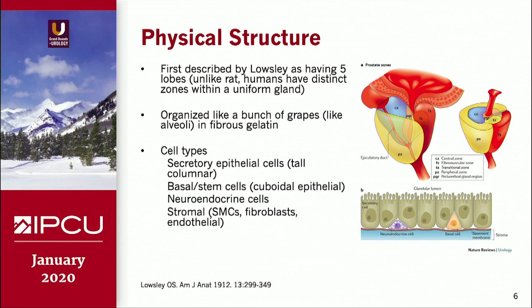Both conditions are hormone dependent and have been associated with inflammation. In terms of the physical structure of the prostate, it was first described by Dr. Lowsley as having five lobes. However, unlike the rat, humans have distinct zones within a relatively uniform gland — very similar to a bunch of grapes dipped into a jello mold, and similar to the lung in that sense. There are a variety of cell types: secretory epithelial cells, basal or stem cells mixed with neuroendocrine cells, and below that the stroma.